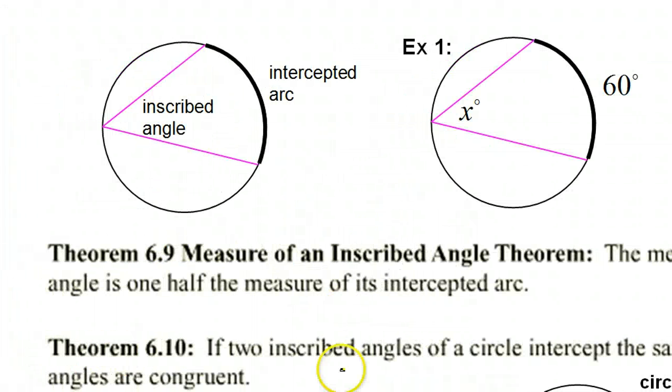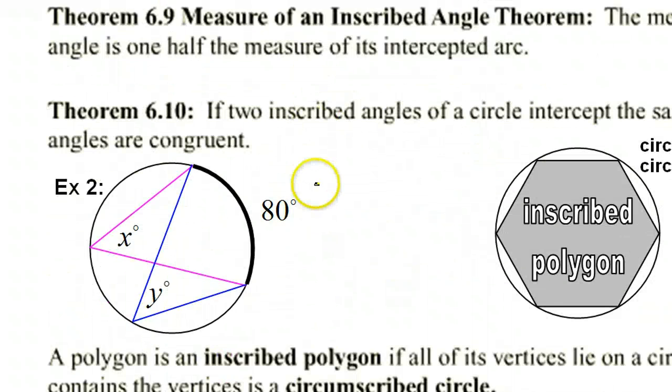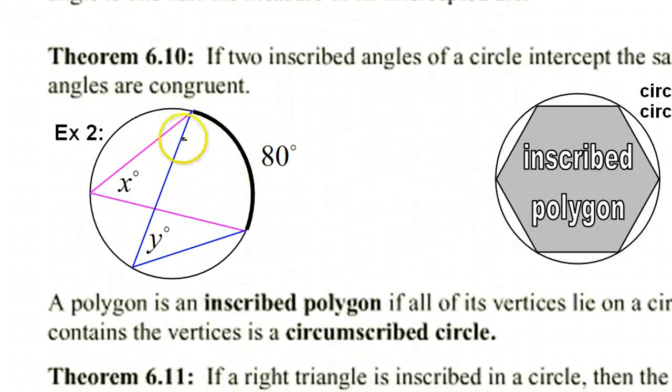All right, this relationship leads to a very interesting pattern. Because, look, focus on the angle that is x degrees, the pink angle. Notice it has an intercepted arc of 80. What would be the measure of this pink angle? Yeah, hopefully you can see that the pink angle here would have a measure of 40 degrees. It's an inscribed angle. It's going to be half the arc.